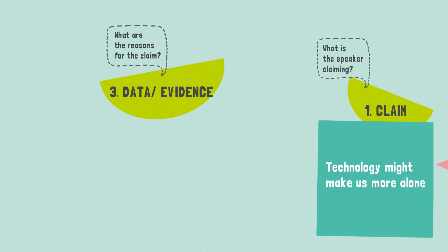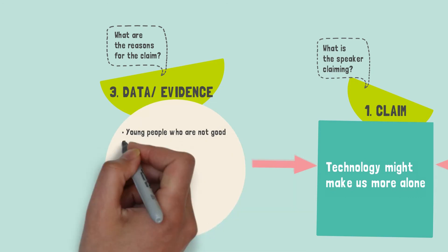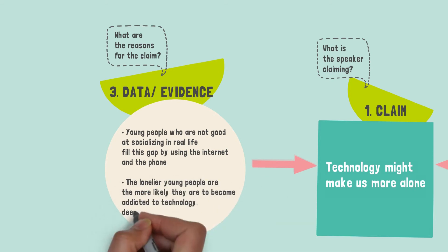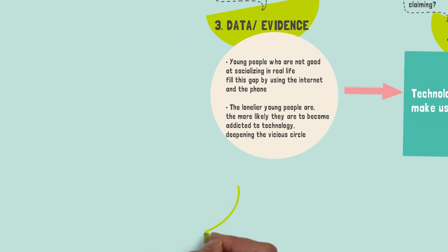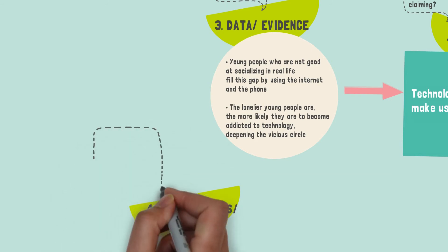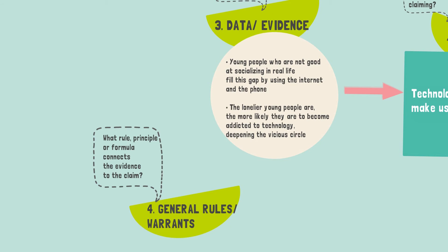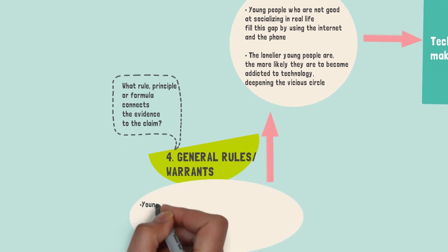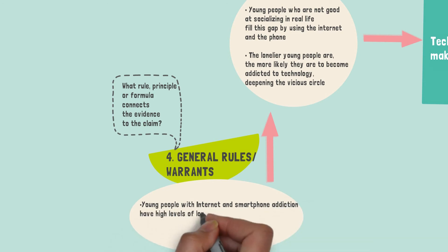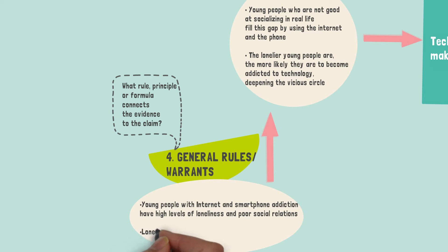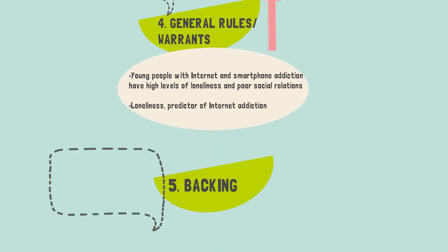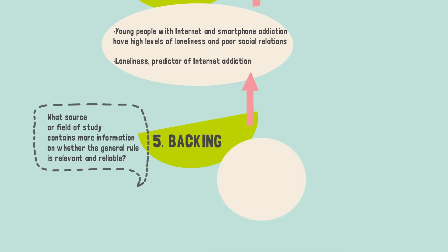To support my claim, I use varied data, such as the idea that young people who are not good at socializing in real life fill this gap by using the internet and the phone. Also, the lonelier young people are, the more likely they are to become addicted to technology, deepening this vicious circle. Two elements constitute the warrants: first, the fact that young people with internet and smartphone addiction have high levels of loneliness and poor social relations; second, the fact that loneliness is a predictor of internet addiction. To back the warrants, I include links to studies which show evidence for these claims, available in the description of this video.